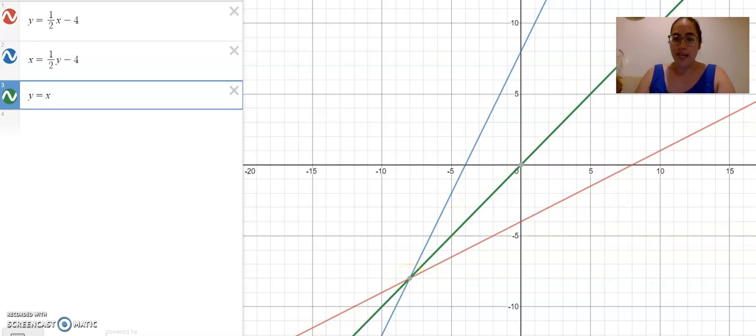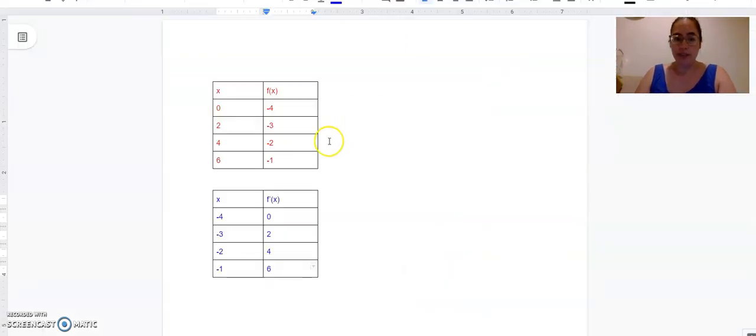If we look at a table, I've already created a table here of both functions, you'll see that the points, just as the variables did, are transposed. So the x and y values, the inputs and the outputs, are transposed. You have 0, negative 4 here, but then on the inverse negative 4, 0. They transpose again, switch.